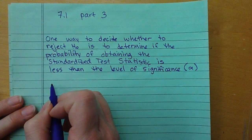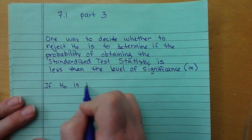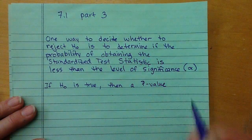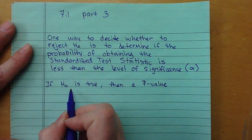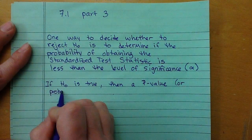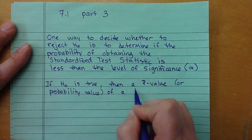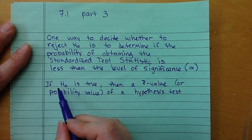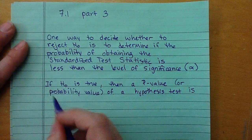We always assume that H sub-zero is true. So if H sub-zero is true, then a p-value — or probability value — of a hypothesis test is the probability that the sample statistic would be what you got, or more extreme.